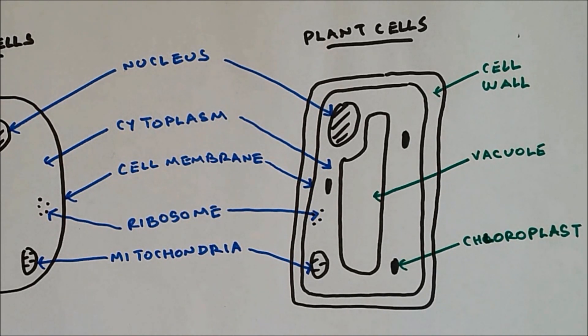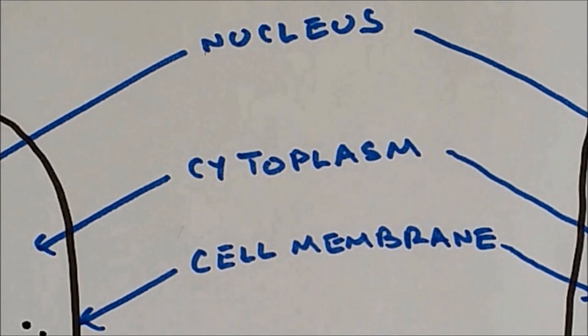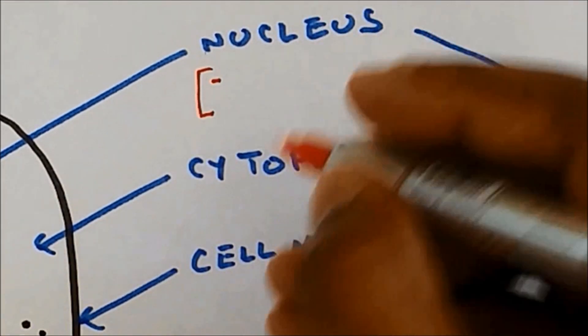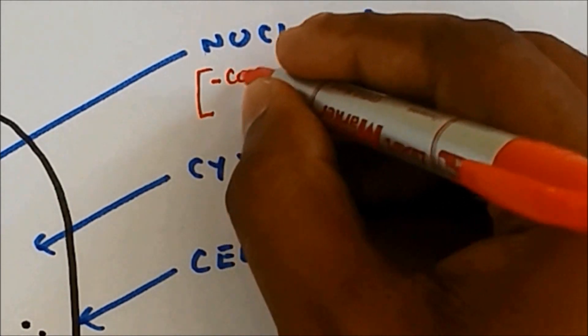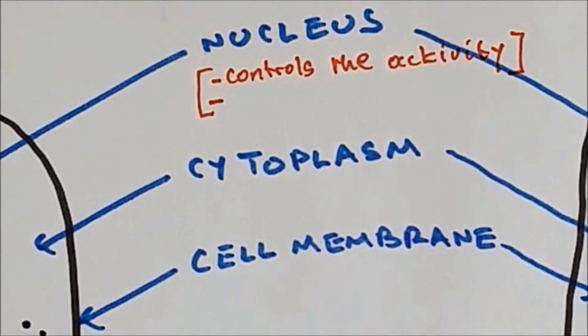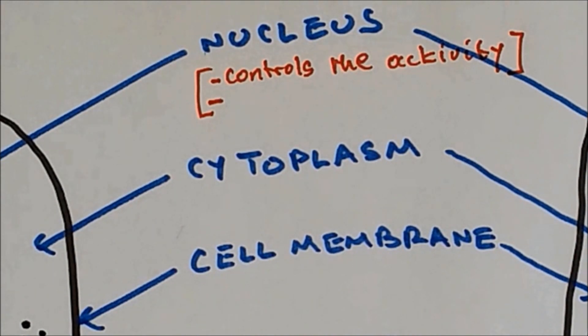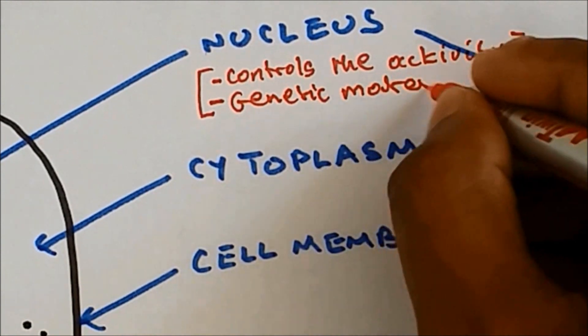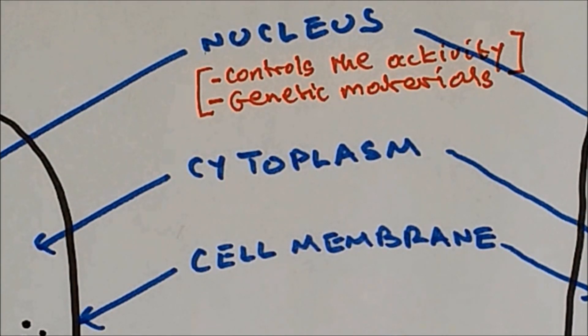Now let's take a look at the functions. Nucleus controls the activity of the cells and it also contains genetic materials. These are chromosomes, genes and DNA.